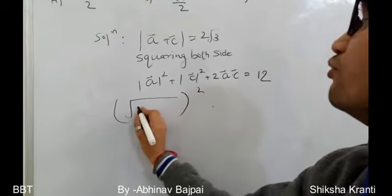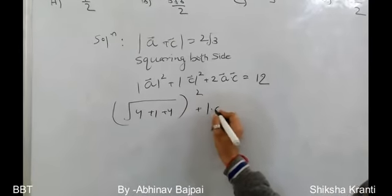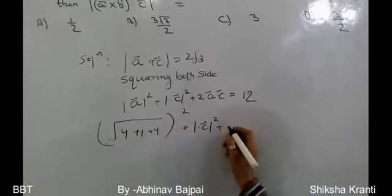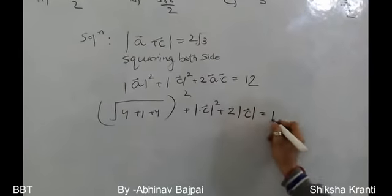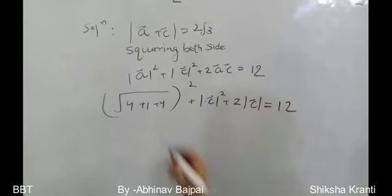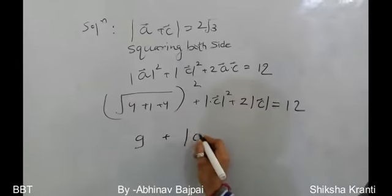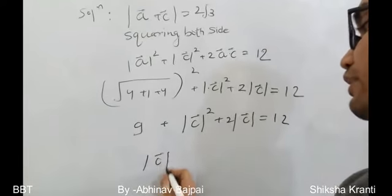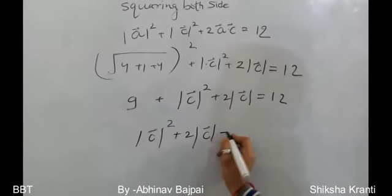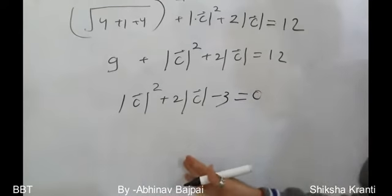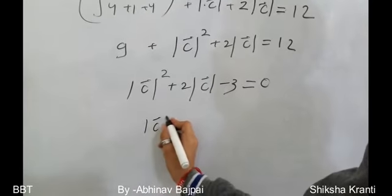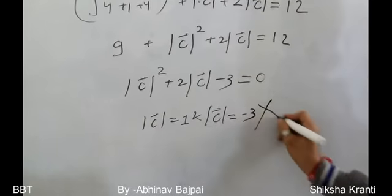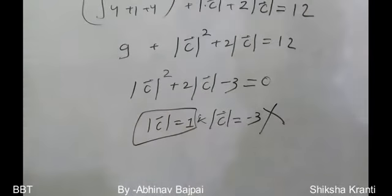The equation becomes |c|² + 2|c| - 3 = 0. Solving this quadratic: |c| = 1 or |c| = -3. Since modulus cannot be negative, we take |c| = 1.